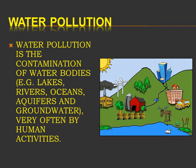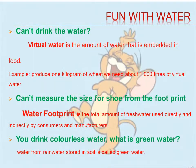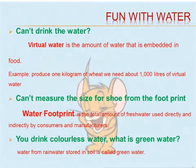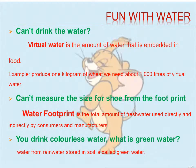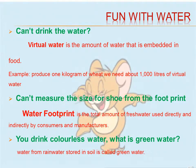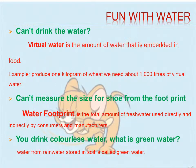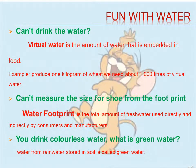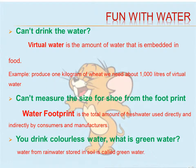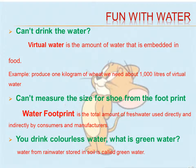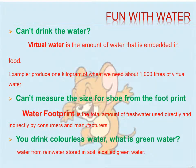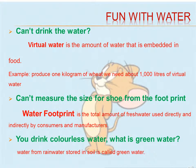Water pollution is the contamination of water bodies such as lakes, rivers, and aquifers, very often by human activities. Virtual water is the amount of water embedded in the food we produce — for example, producing 1 kilogram of food requires 1000 litres of virtual water. A water footprint is the amount of fresh water used directly or indirectly by manufacturers or consumers. Green water is the water stored in the soil.